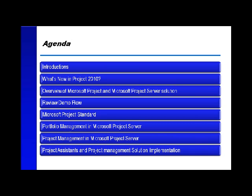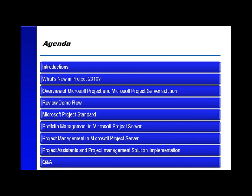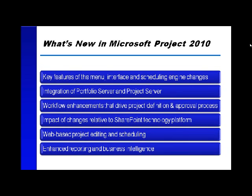I'll talk a little bit about project assistance and the approach to project management solution implementation. In terms of what's new in Microsoft Project, the first things we want to talk about are the key features around the menu system, the interface, and the scheduling engine changes. Then we'll talk about what's happened with the integration of what used to be a separate product called Portfolio Server that's now Project Server, workflow enhancements that drive the project definition and approval process, the impact of changes relative to the SharePoint technology platform, web-based project editing and scheduling, and enhanced reporting and business intelligence.